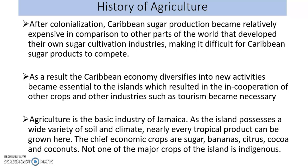In the post-colonial era, self-sufficiency in food and import substitution was promoted to replace imported meat and milk products. After colonization, Caribbean sugar production became relatively expensive compared to other parts of the world that developed their own sugar industries, making it difficult for Caribbean sugar products to compete. As a result, the Caribbean economy diversified into new activities, including tourism, and other crops and industries became essential. Agriculture is the basic industry of Jamaica, as the island possesses a wide variety of soil and climate, and nearly every tropical product can be grown here. The chief economic crops are sugar, banana, citrus, cocoa, and coconut, though none of these major crops is really indigenous to Jamaica.